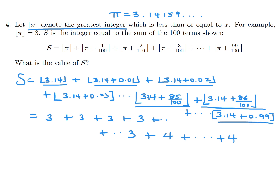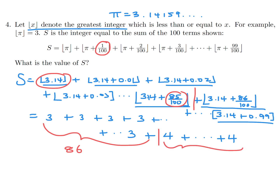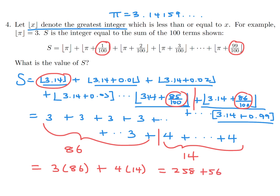Now we figure out how many terms are in each category. From term 1 to term 85, plus the break point — that's 86 terms giving a floor value of 3. Then from 86/100 to 99/100 that's 14 terms giving a floor value of 4. So the sum is 3 × 86 + 4 × 14 = 258 + 56 = 314.